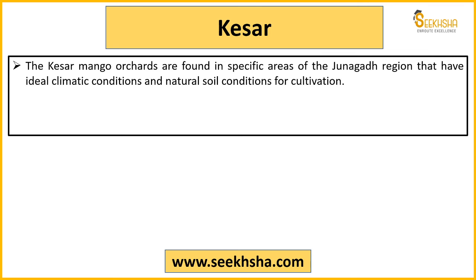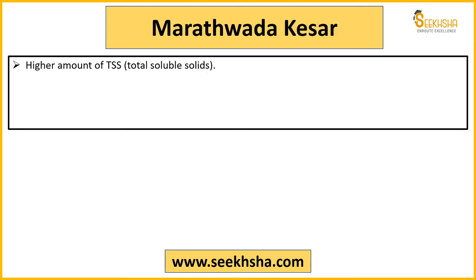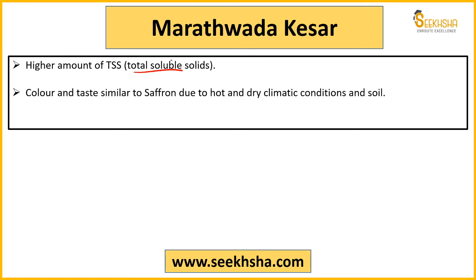Then comes Kesar mango. Kesar mango is found in the Junagadh region, which has very good climatic and natural soil conditions for it. Its taste, aroma, and pulp color are all very attractive. Then there is also Marathwada Kesar - the Gir Kesar we discussed belongs to Gujarat. Marathwada Kesar, compared to other varieties, has a higher amount of total soluble solids. Its color and taste are very similar to saffron.